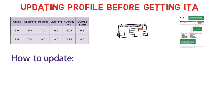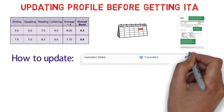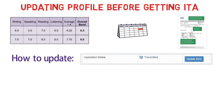Now, how can you actually go and update it? Here's a simple screenshot — you'll find the 'Update Form' button there. Once you click it, it will take you back to your Express Entry profile and then you can update whichever information you want to update.